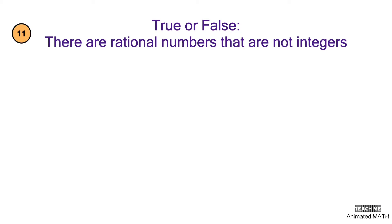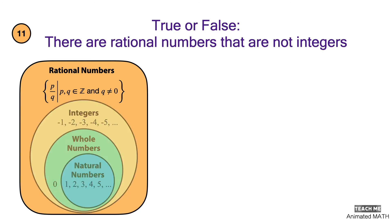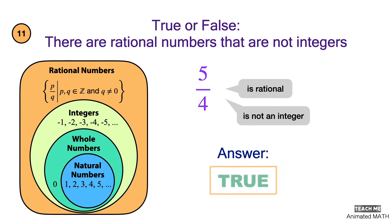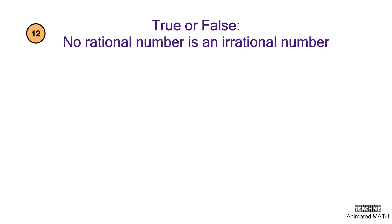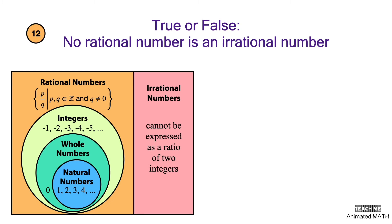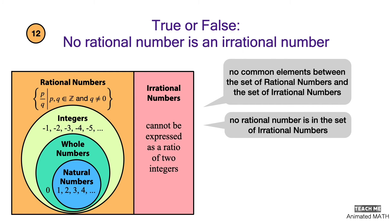There are rational numbers that are not integers. Looking at our diagram for the set of rational numbers, the answer is true. No rational number is an irrational number. This is our diagram for both the set of irrational numbers and the set of rational numbers — they don't overlap because they don't have any common elements. None of the rational numbers are in the set of irrational numbers, so the answer is true.